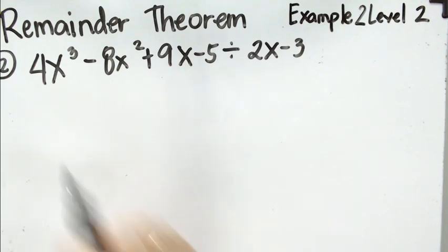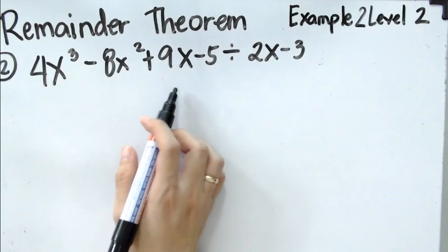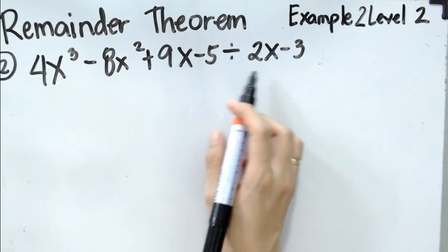So, if we have here 4x cubed minus 8x squared plus 9x minus 5 divided by 2x minus 3.